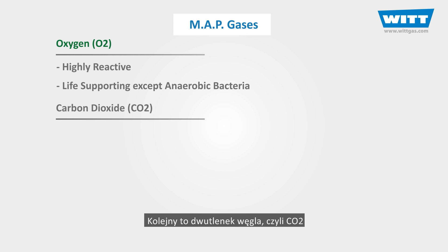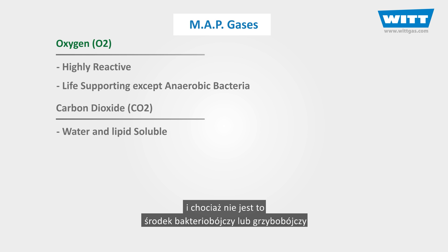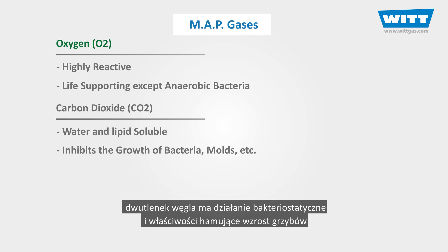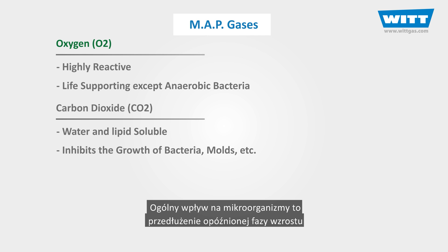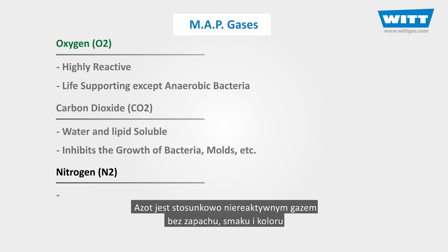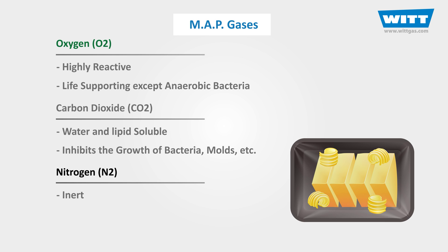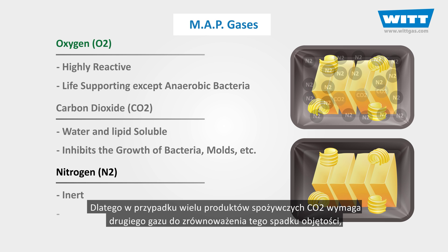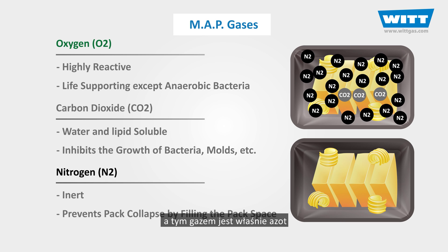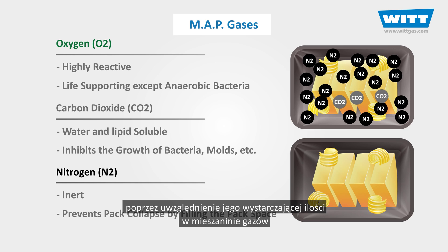The next gas is carbon dioxide, or CO₂. Carbon dioxide is both water and lipid soluble, and although it is not a bactericide or fungicide, it has bacteriostatic and fungistatic properties. The overall effect on microorganisms is an extension of the lag phase of growth and a decrease in the growth rate during the logarithmic growth phase. The last gas is nitrogen, or N₂. Nitrogen is a relatively unreactive gas with no odour, taste, or colour. Using carbon dioxide alone can lead to a volume decrease due to CO₂ going into solution, so for many food products CO₂ requires a second gas — nitrogen — to balance this volume decrease and prevent pack collapse.